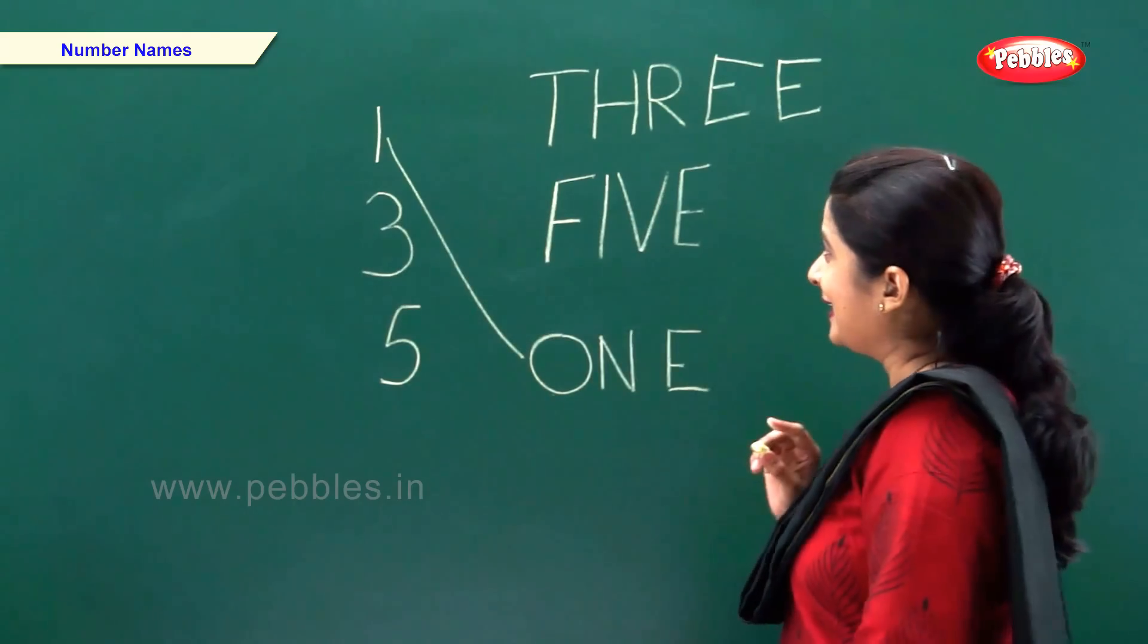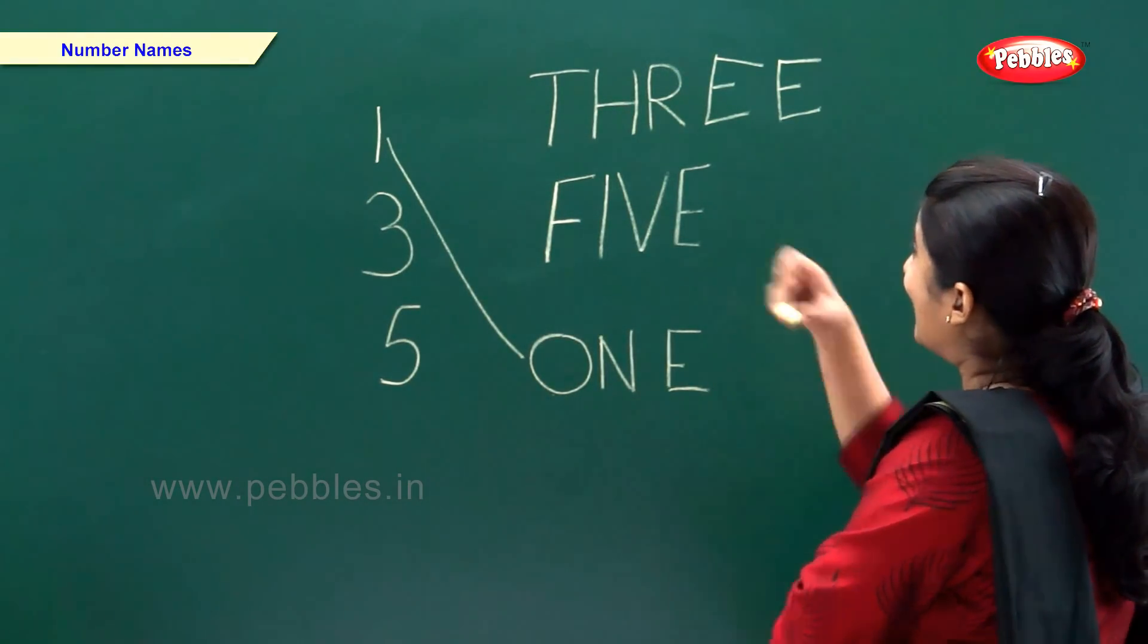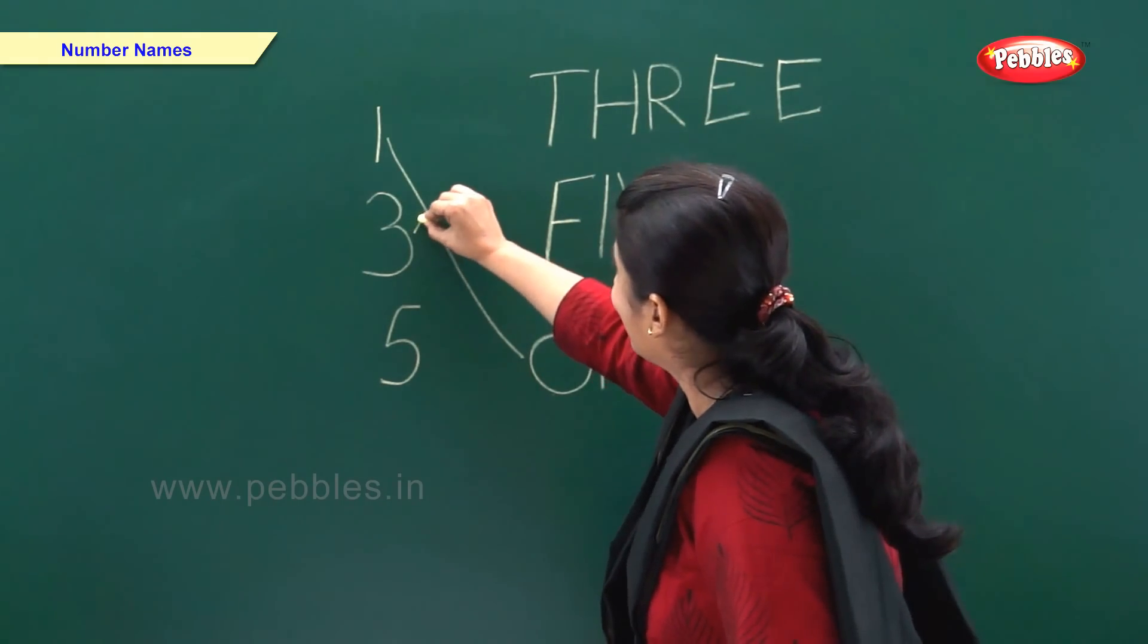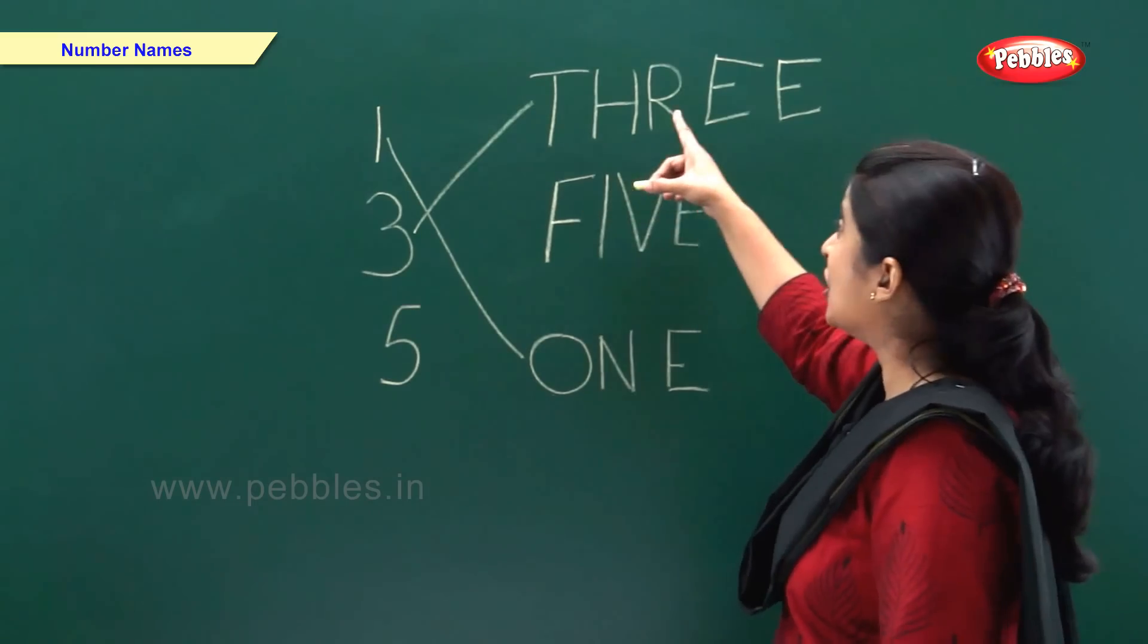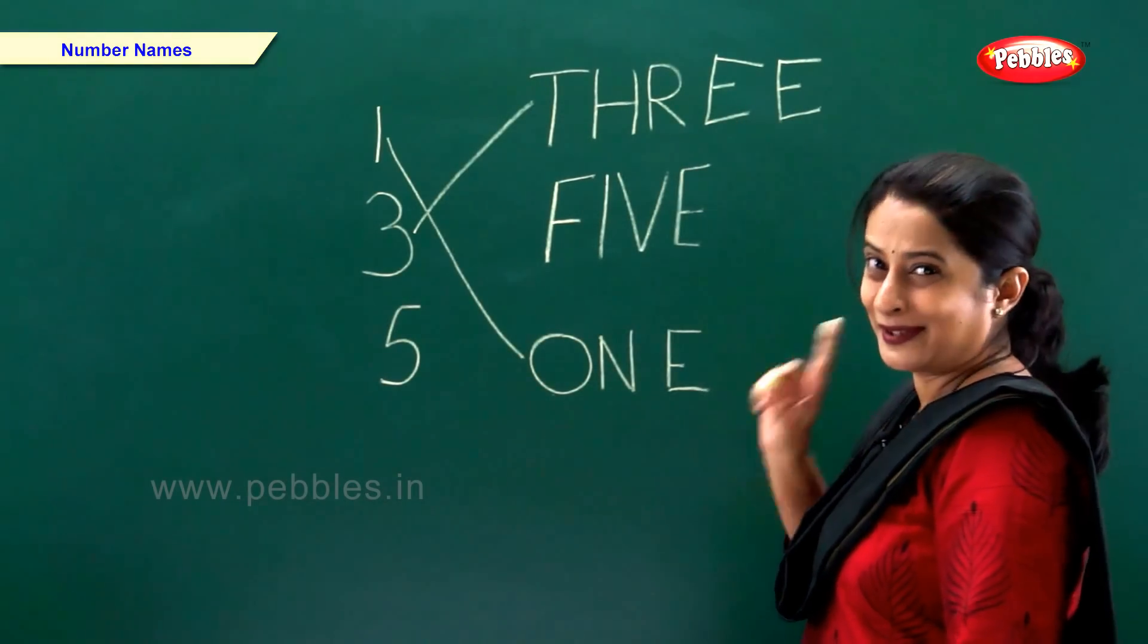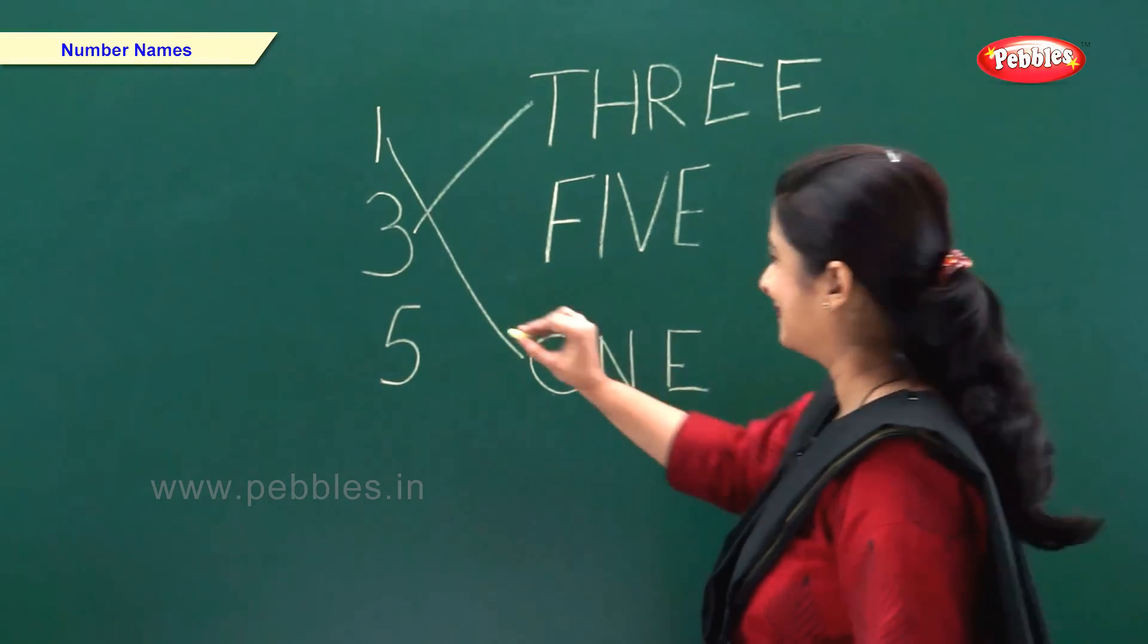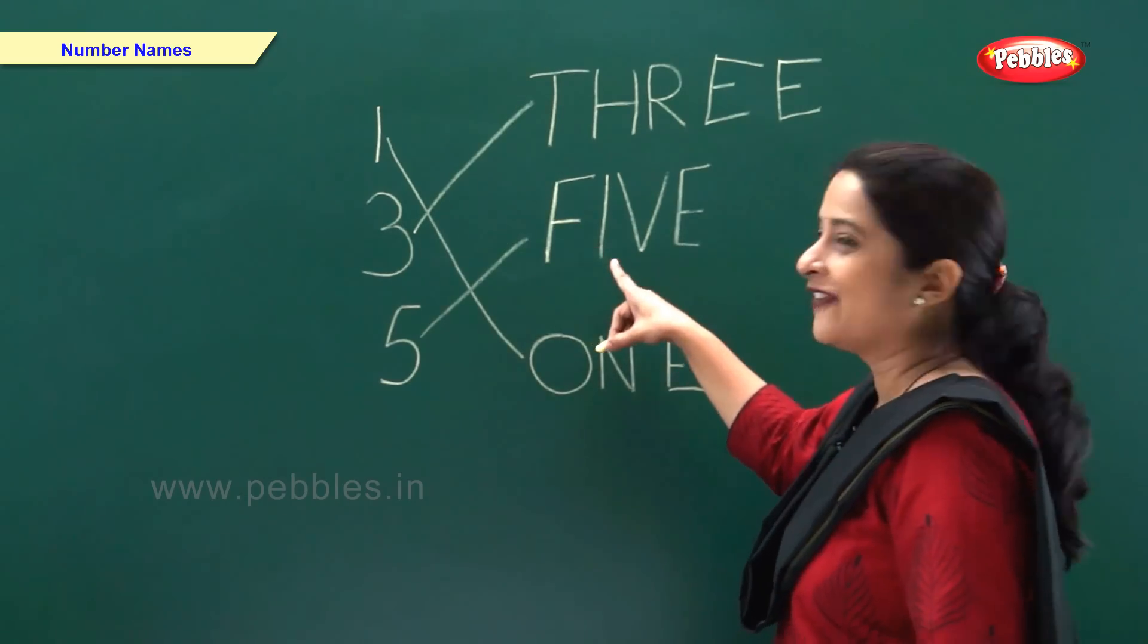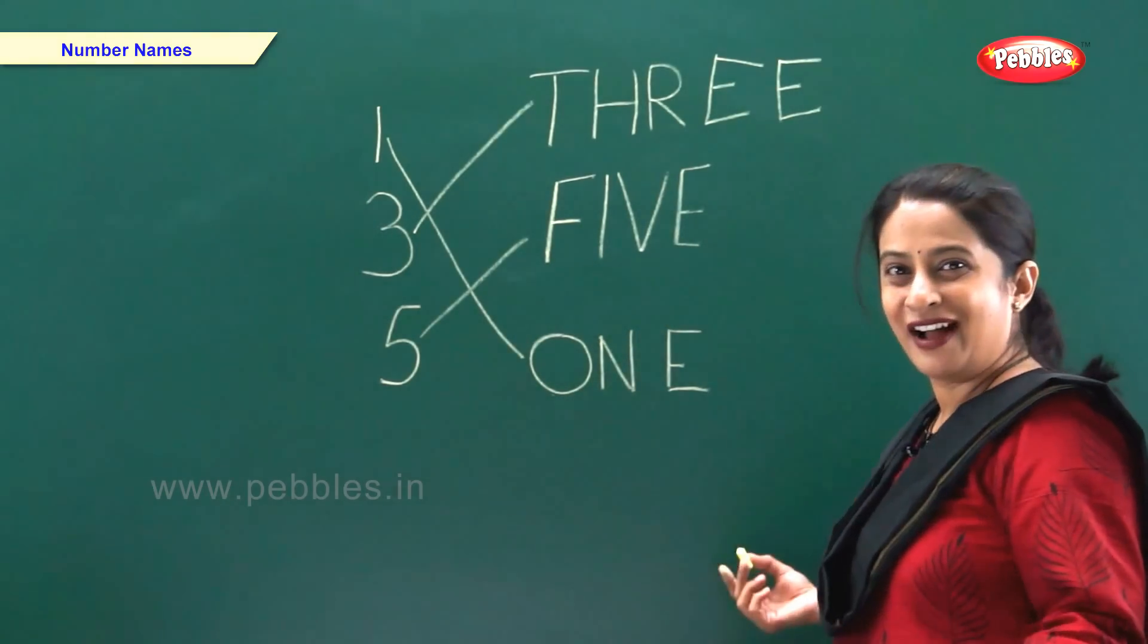Number 3. Where is the number name for number 3? Oh, it's at the top. 3 T H R E E. Number 3. And now, number 5. 5 F I V E 5.